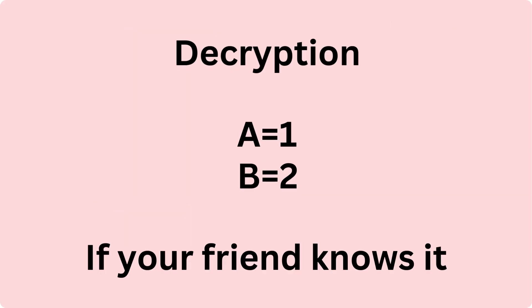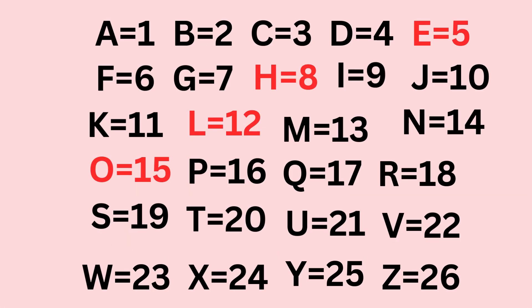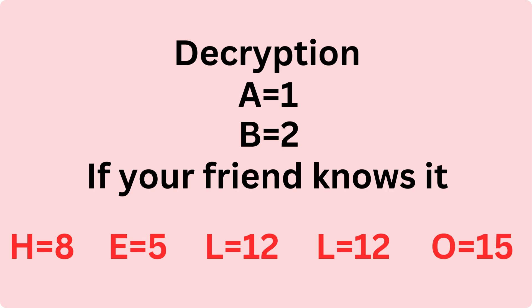Decryption: your friend, who knows the secret system, converts 8, 5, 12, 12, 15 back to 'hello.'